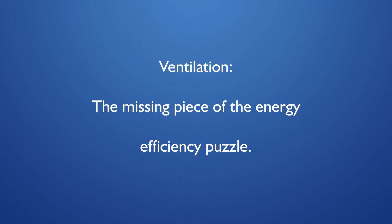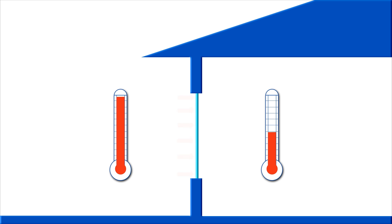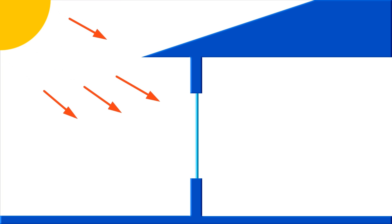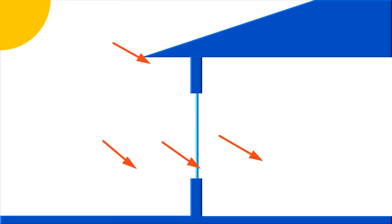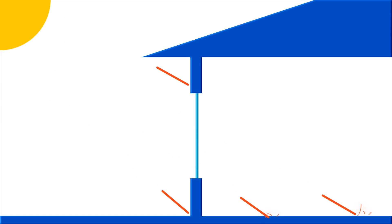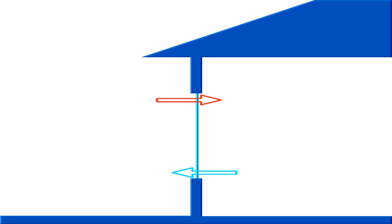Discussions of the energy efficiency of windows generally revolve around how well the window insulates against heat transfer, how much solar heat gain comes through the window in the form of sunlight, and how tightly the window seals against air infiltration.